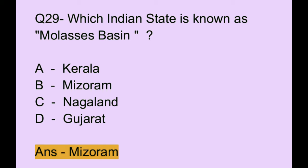Question number 29. Which Indian state is known as the Molasses Basin? Option A: Kerala. Option B: Mizoram. Option C: Nagaland. Option D: Gujarat. The correct answer is option A, which is Mizoram.